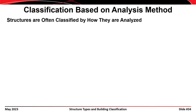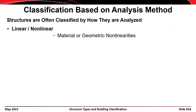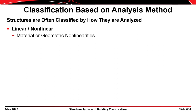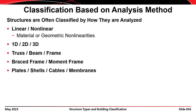Structures are also sometimes classified based on how they are analyzed. Analysis can be linear or non-linear with respect to either material behavior or geometry. For material, you can assume linear elastic behavior or account for yielding and fracture. For geometric non-linearity, you account for the change in geometry as the structure deforms under load. Structures can also be characterized as one-dimensional, two-dimensional, or three-dimensional, and analysis assumptions may treat the structure as a truss, a beam, a frame, a plate, a shell, a cable, or a membrane.